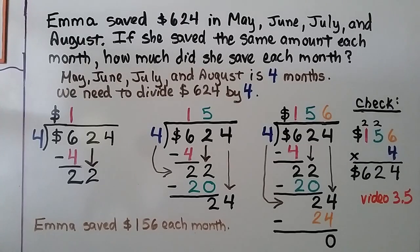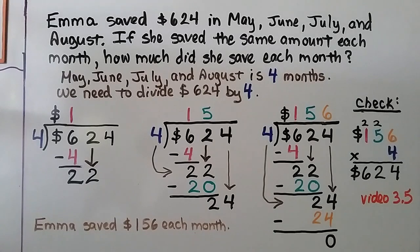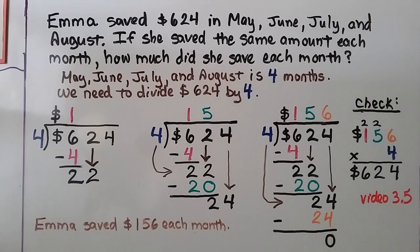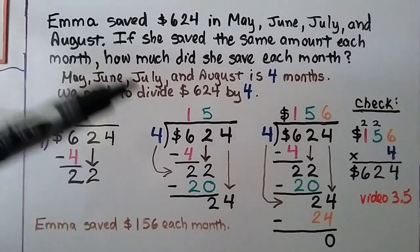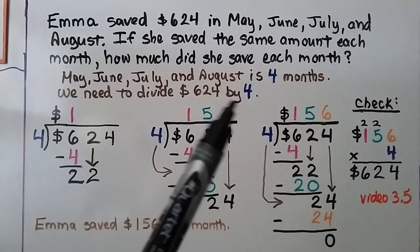Emma saved $624 in May, June, July, and August. If she saved the same amount each month, how much did she save each month? May, June, July, and August is 4 months, so we need to divide 624 by 4.